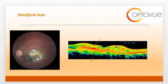On OCT, a disciform scar appears as a hyperreflective area with distinct borders underneath the neurosensory retina. You can see a complete loss of the outer retinal layers and photoreceptors above the scar. Cystic spaces, visible as hypo-reflective areas, occur in the inner retina due to the degenerative changes occurring throughout the retina.